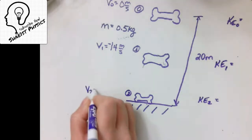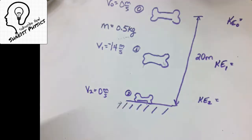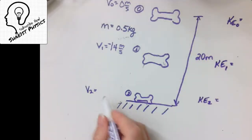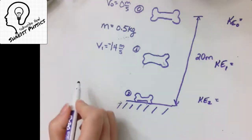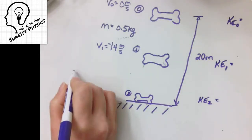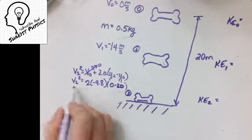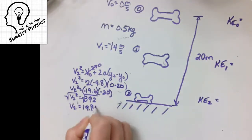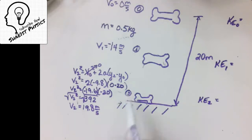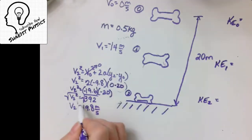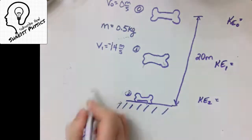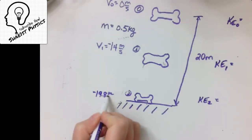When it hits the ground, is it 0 meters per second? No — these objects get faster and faster. When it hits the ground it's at its fastest velocity. We're not talking about after impact. Using the same kinematic technique, we find the velocity at moment 2. We take the square root and choose negative because it's moving down — it's −19.8 meters per second.